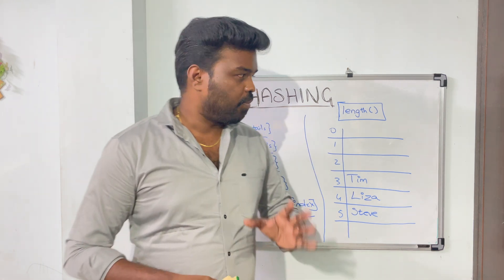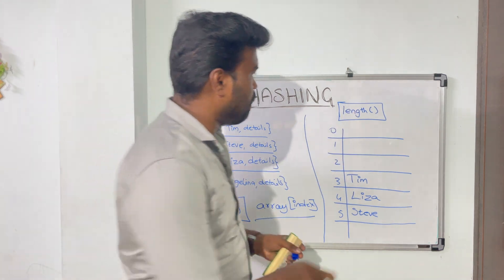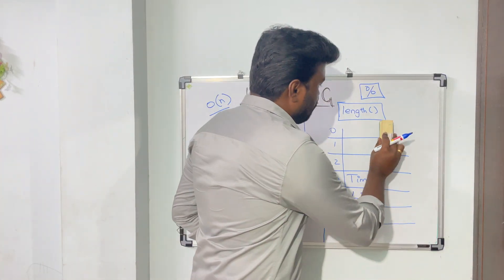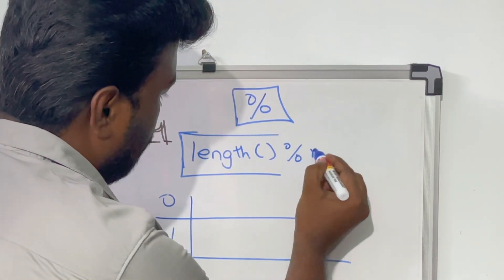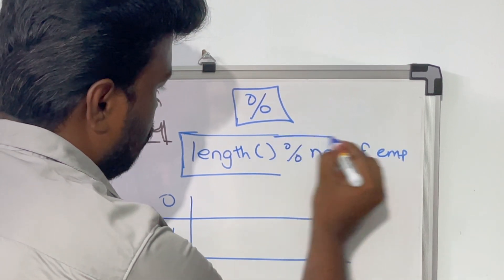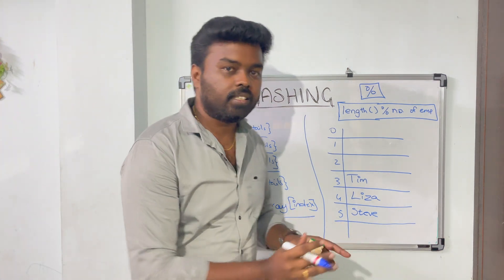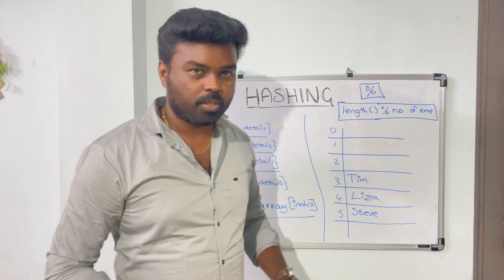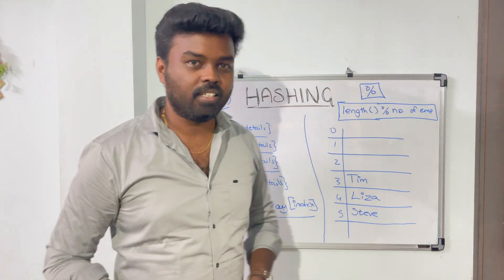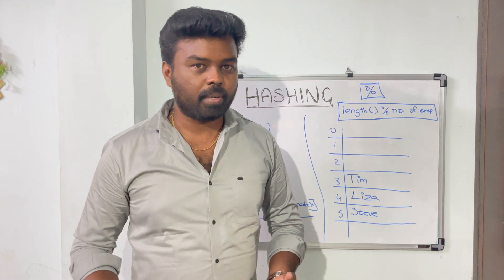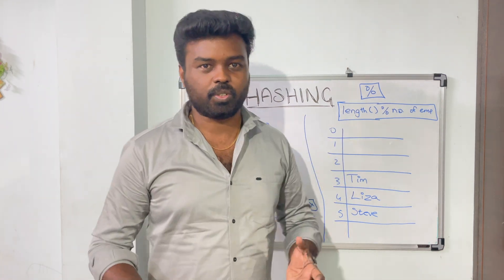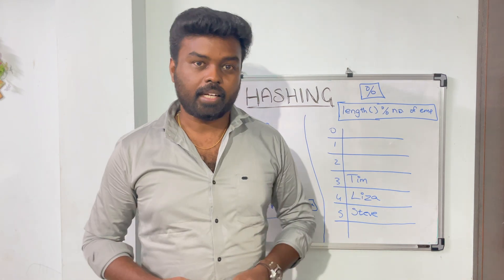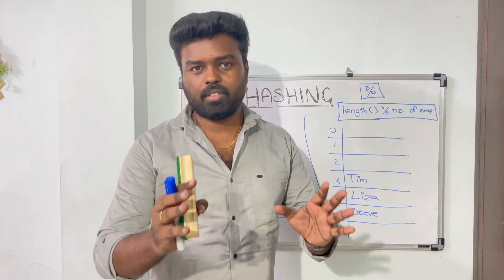We can solve this using the modulo operator. We change our hash function a little bit — instead of just length, we do length modulo number of employees. With this hash function, you don't need to increase the array size; we can limit all employees into a very limited array. For example, take the employee Steve: five characters, and five modulo four (total employees) equals one. So you insert Steve at the first index in the array. By doing this, you don't need a large array size and can limit the size — we've solved the space complexity.